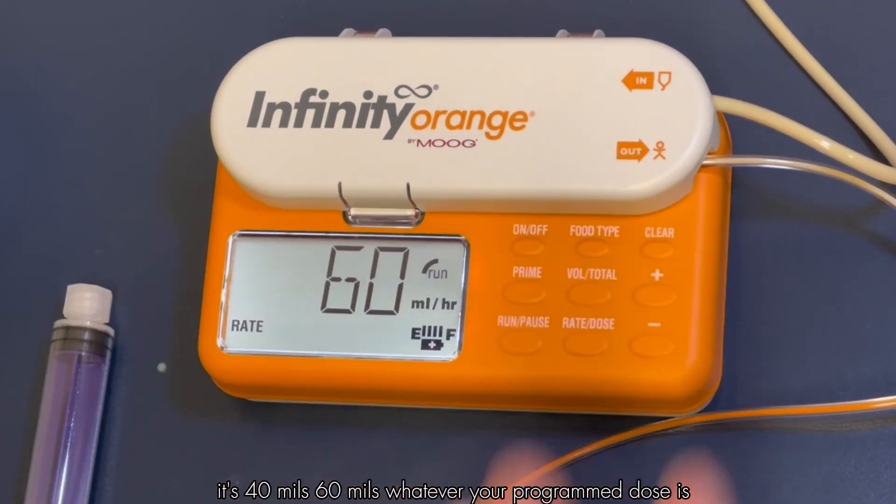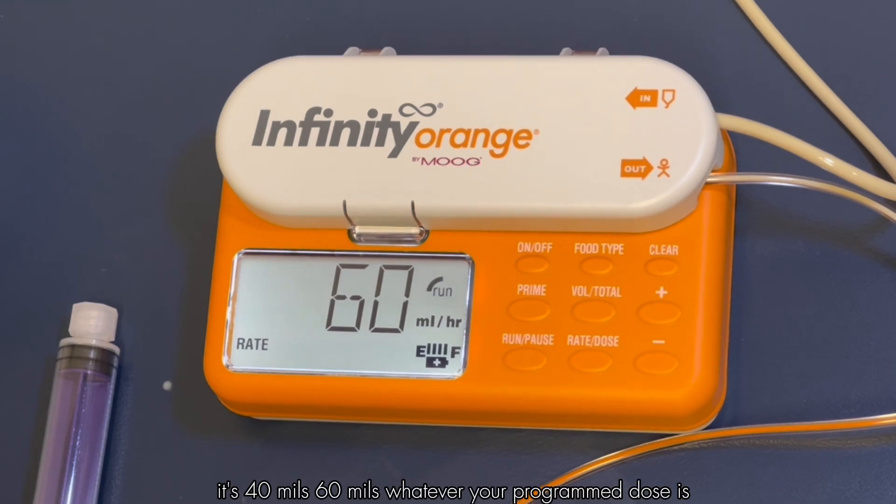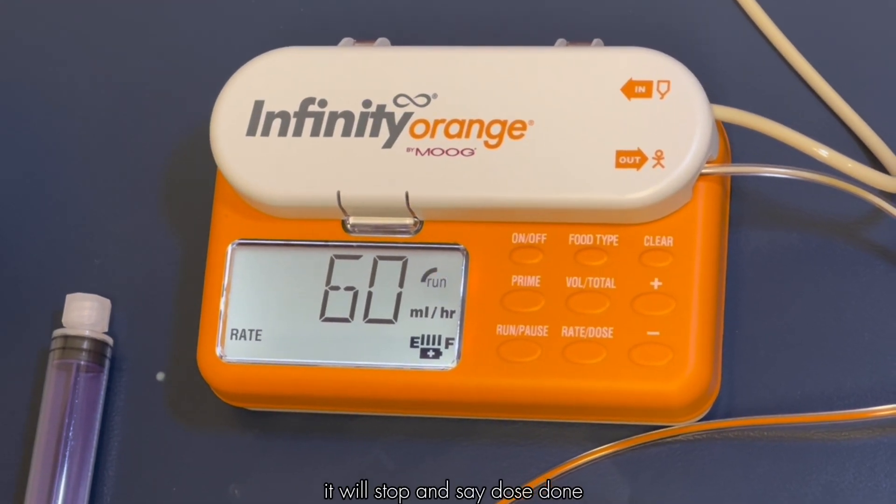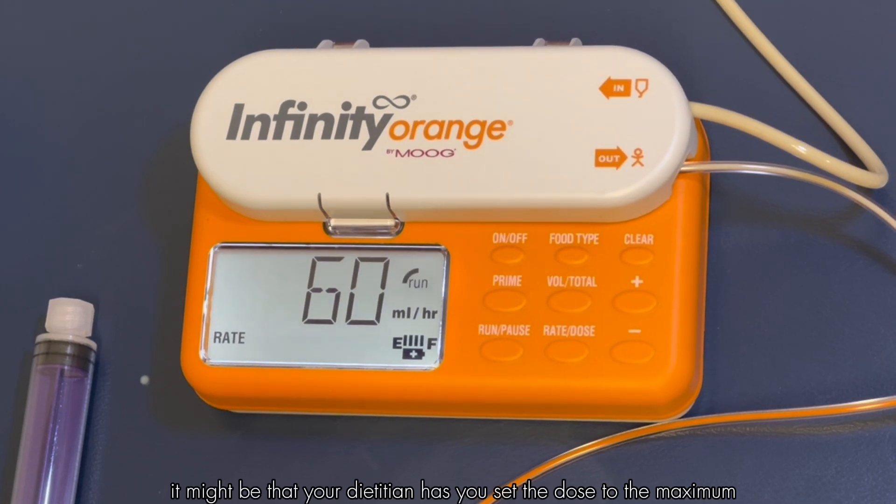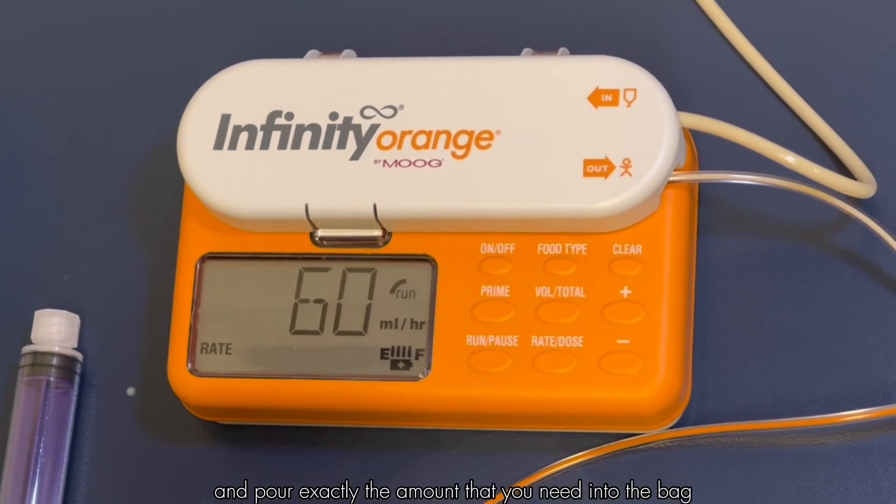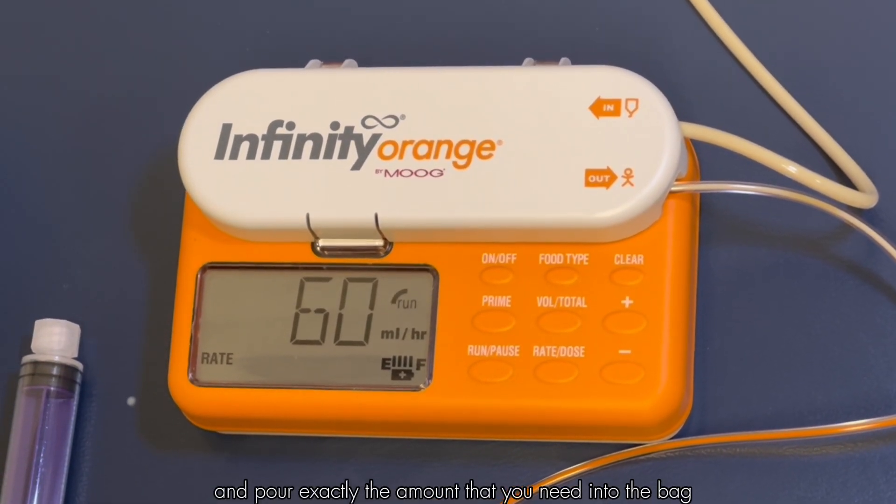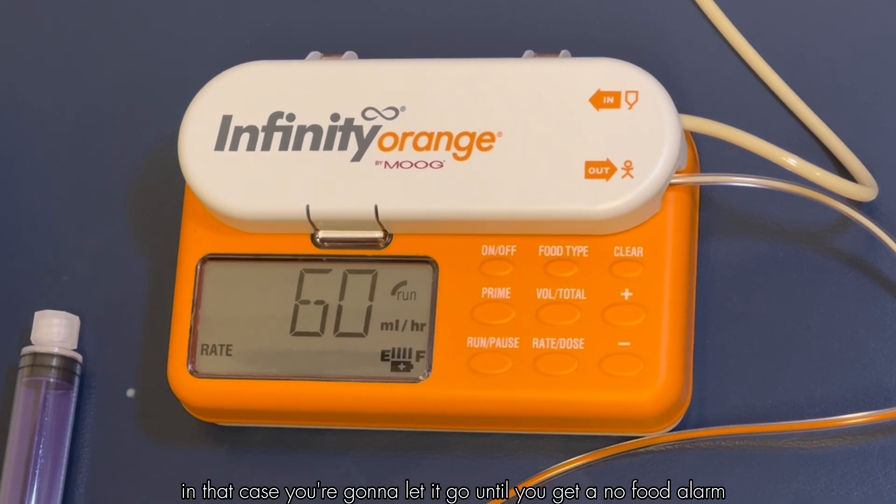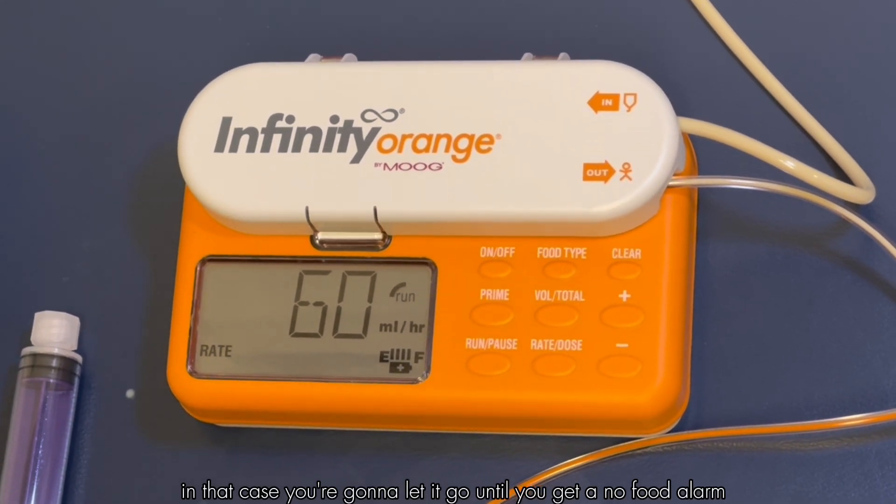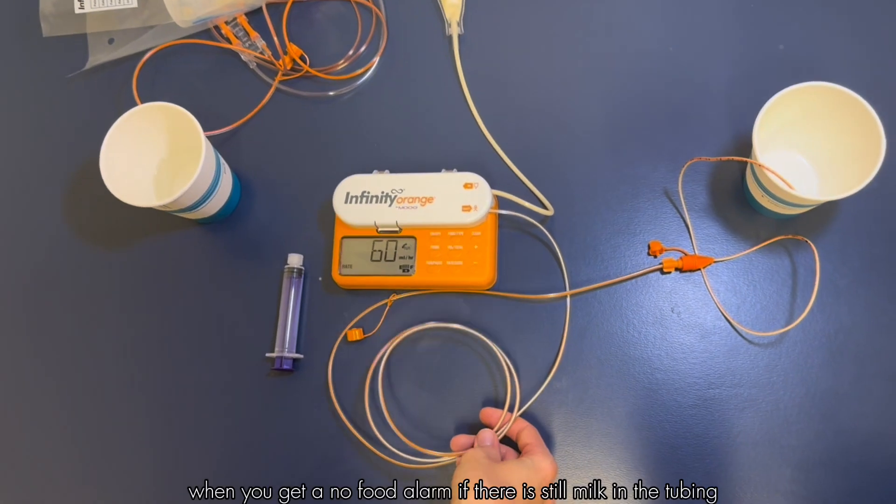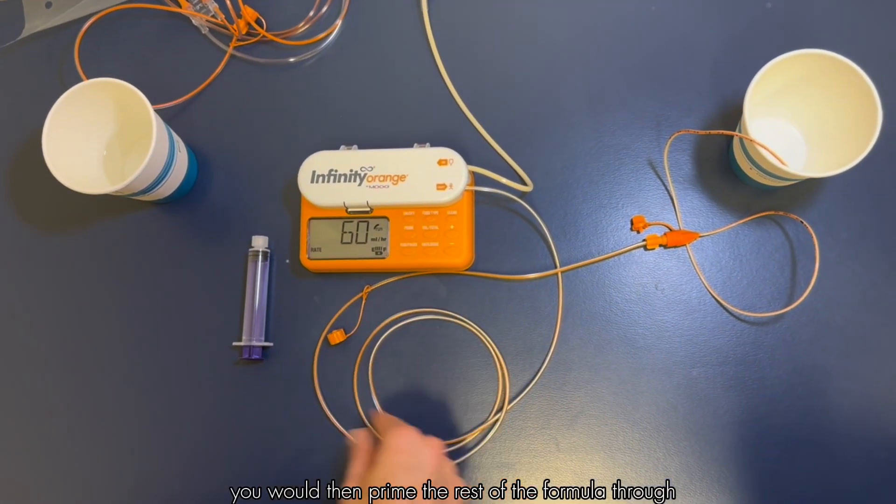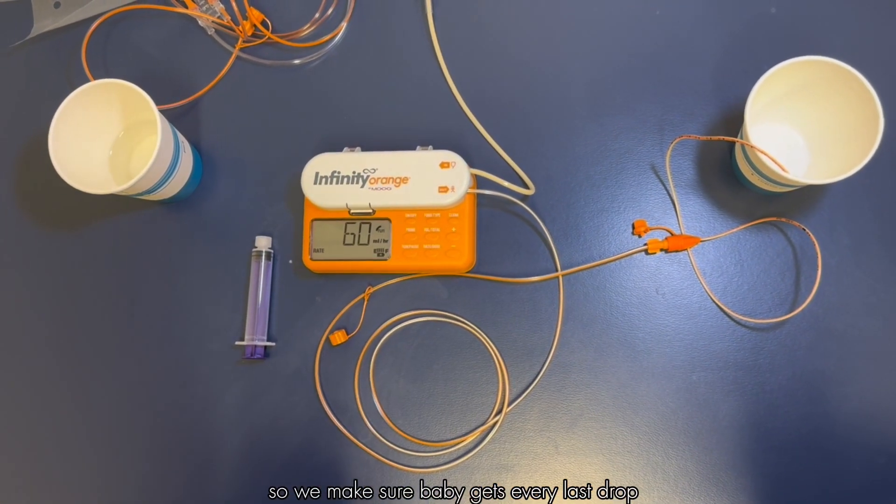Typically we're going to let it go and then the thing that will stop the pump is going to be that dose done alarm. Once it pumps its 40 mil, 60 mils, whatever your programmed dose is, it will stop and say dose done. Now it might be that your dietitian has you set the dose to the maximum and pour exactly the amount that you need into the bag. In that case you're going to let it go until you get a no food alarm. When you get a no food alarm, if there is still milk in the tubing, you would then prime the rest of the formula through so we make sure baby gets every last drop.